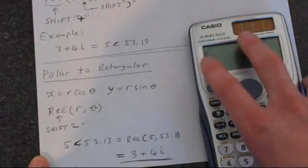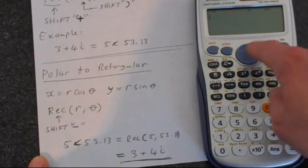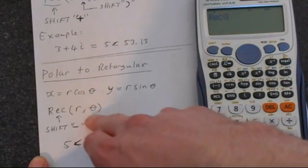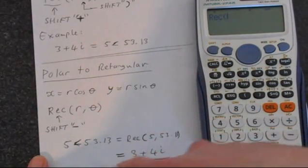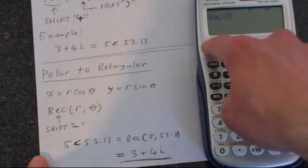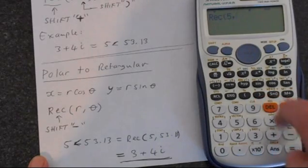To do this in the calculator, using the rect button, which is on the minus. So press shift, and then minus. We get rec. And then we put r comma theta. And we'll just do the same thing again. So we'll put in 5, shift, and then the closed brackets to get the comma.